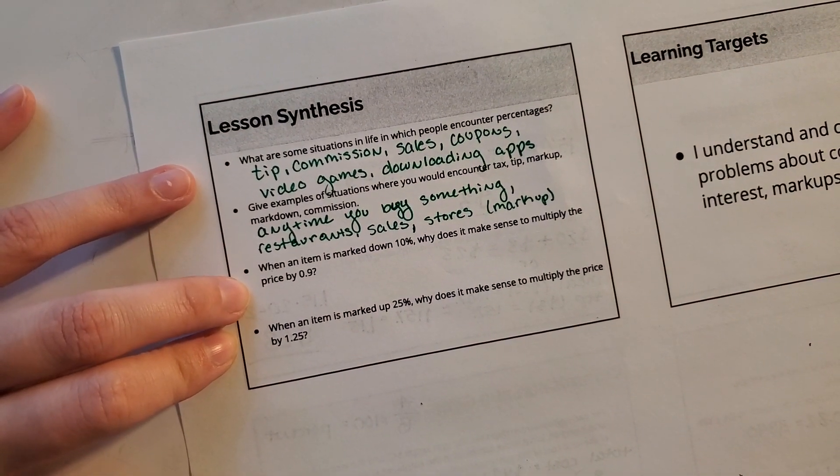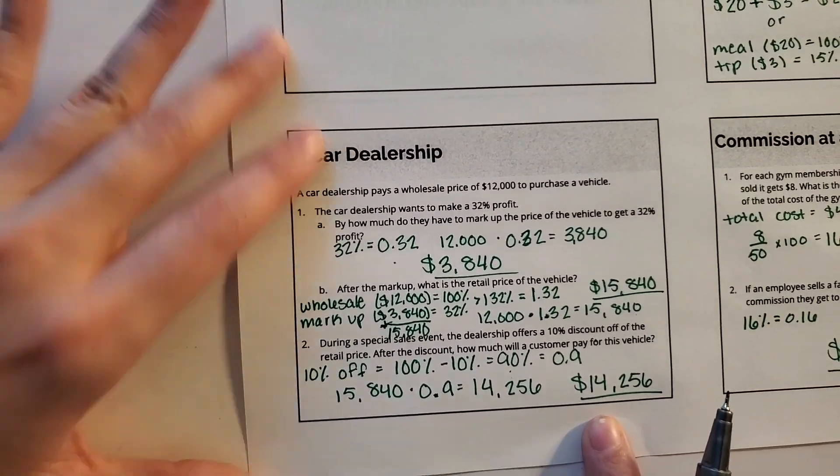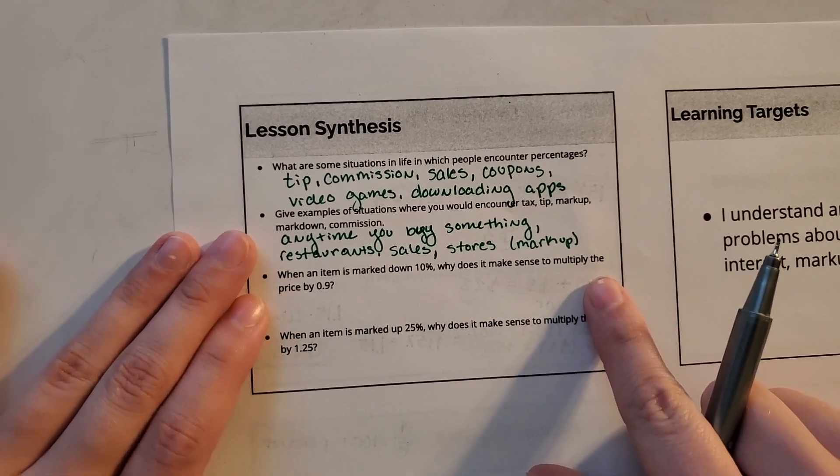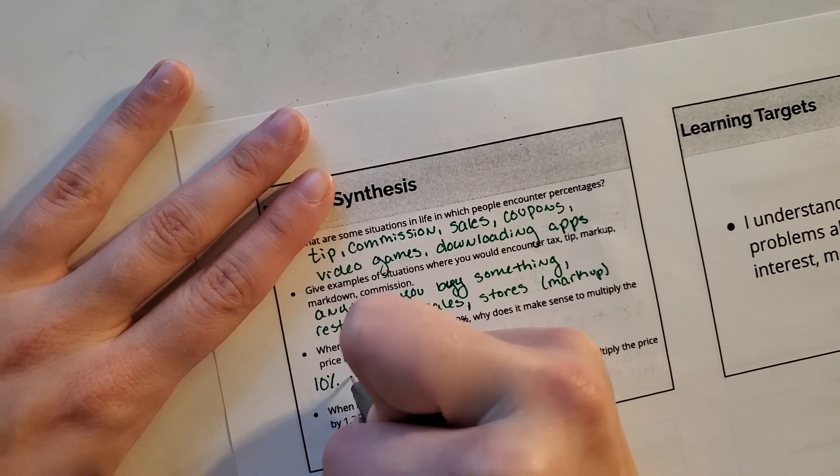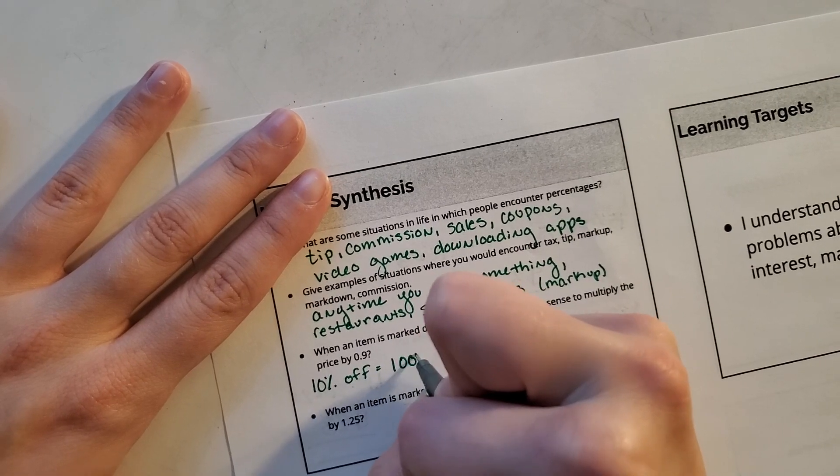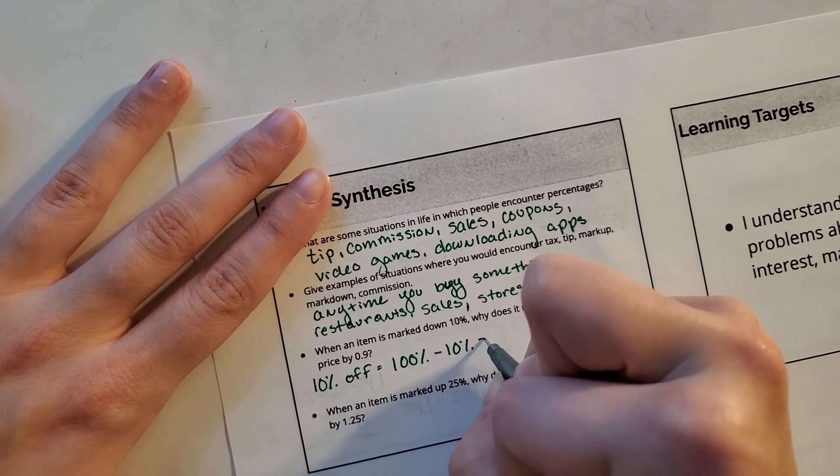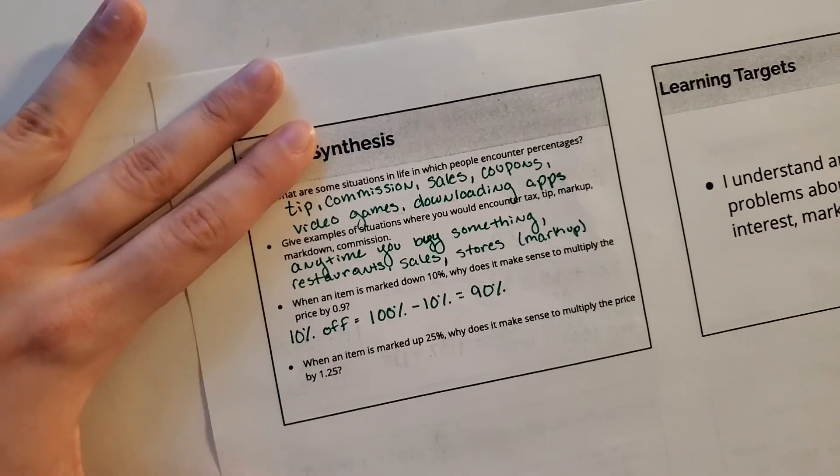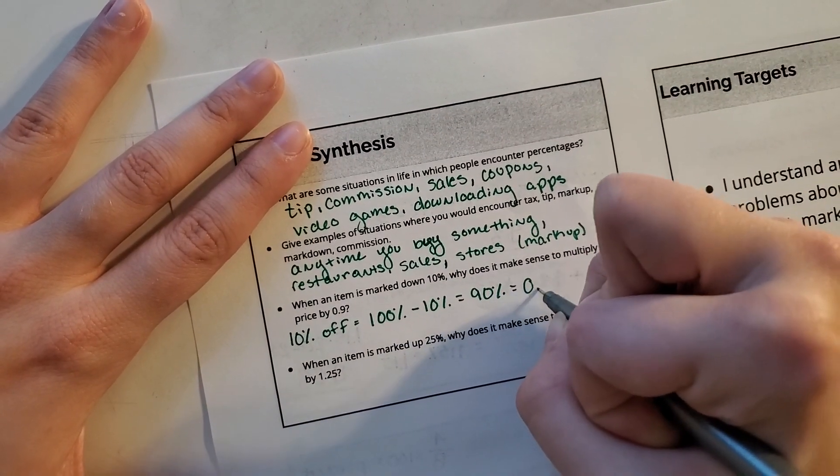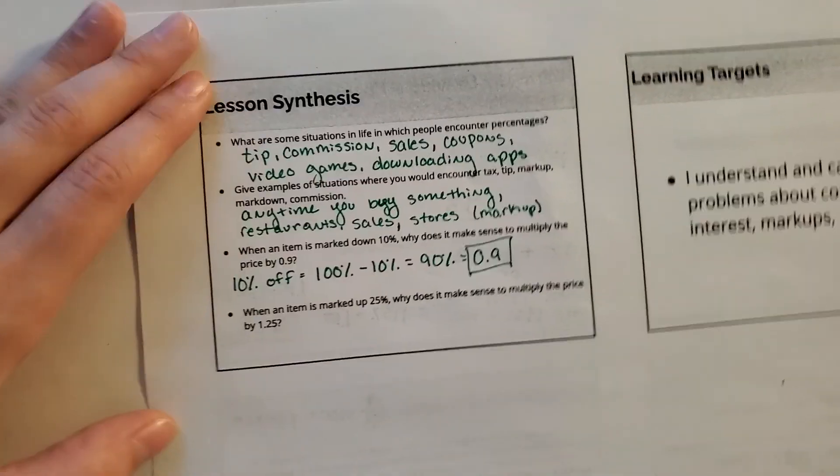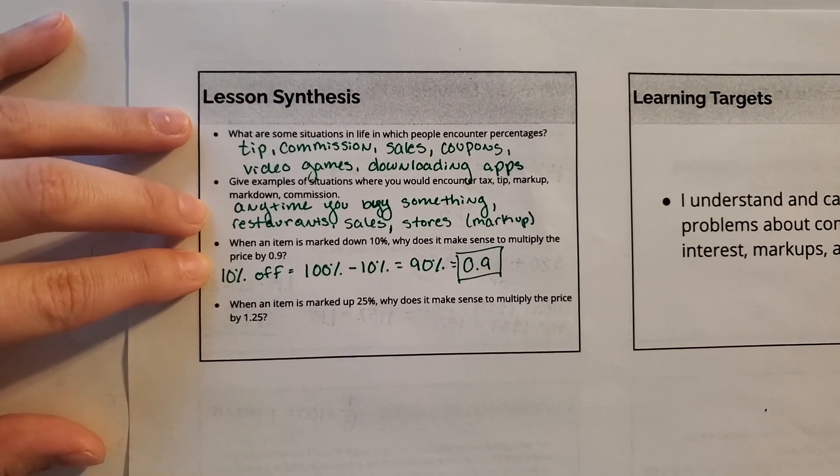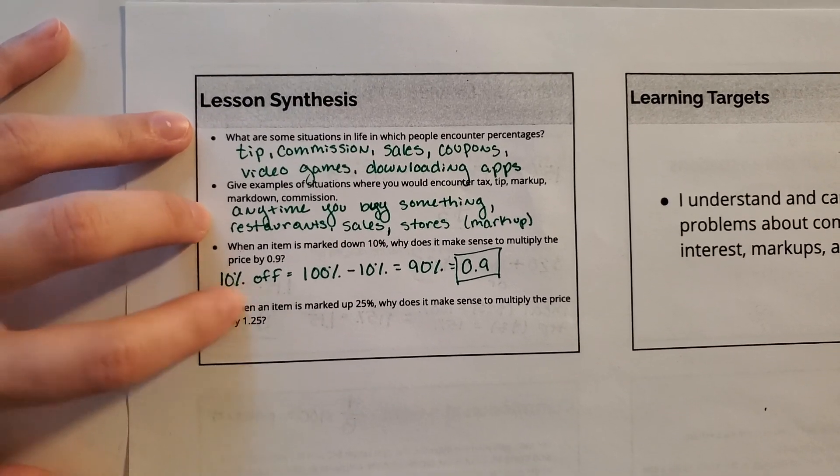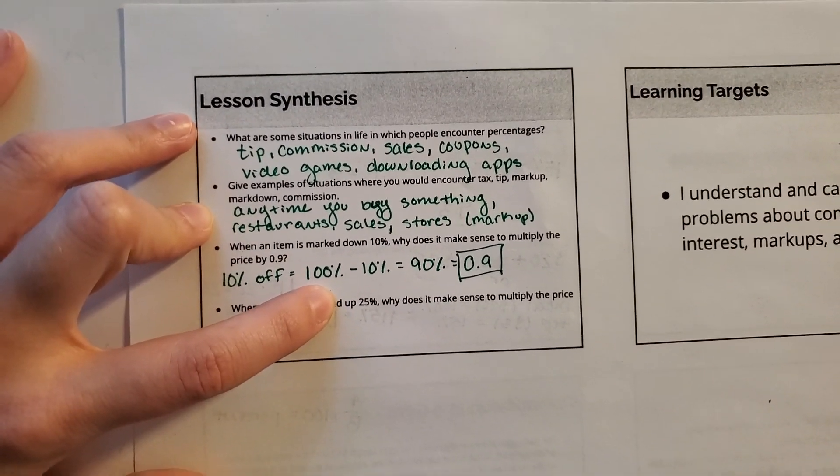When an item is marked down 10%, it makes sense to multiply the price by 0.9 because 10% off is the same thing as 100% minus that 10% because they're taking the 10% off. And that's 90%. Well, 90% as a decimal is 0.9. So that's why it makes sense. That's why we keep doing this.